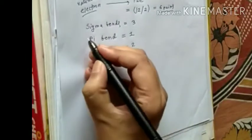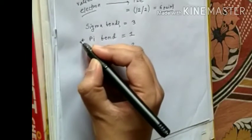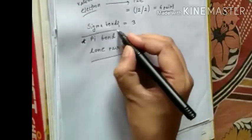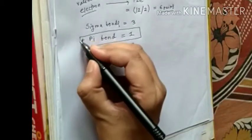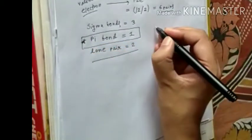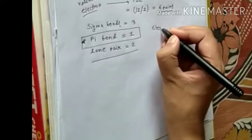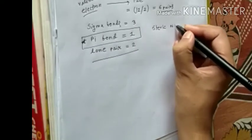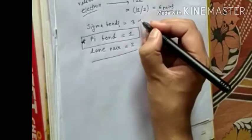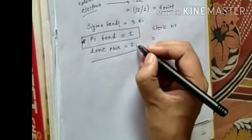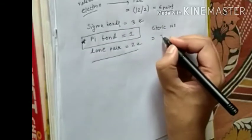Now, the pi bonds are not involved in hybridization, so we exclude that. The steric number is equal to the number of sigma bonds plus the number of lone pairs: 3 plus 2 equals 5.